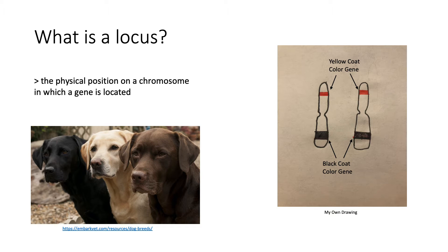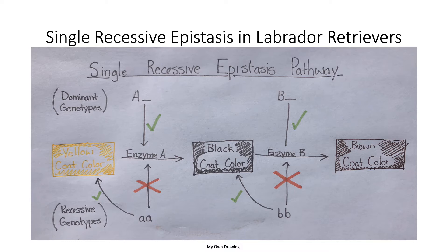In this video we will discuss how the yellow coat color gene and the black coat color gene interact to determine one trait, otherwise known as a phenotype, in a Labrador retriever. There are six different types of epistasis, however we will just be covering single recessive epistasis.